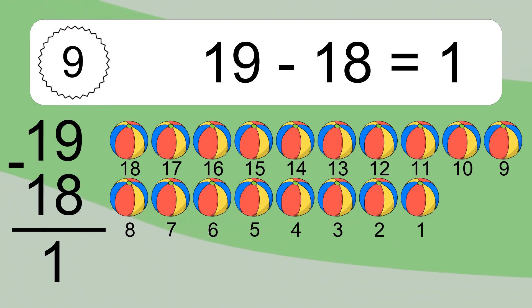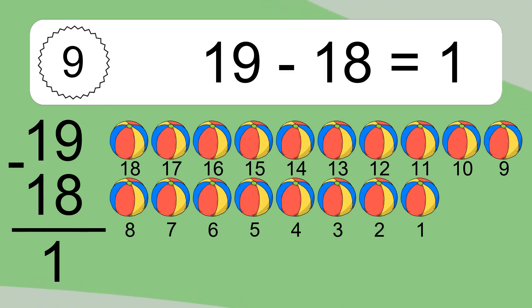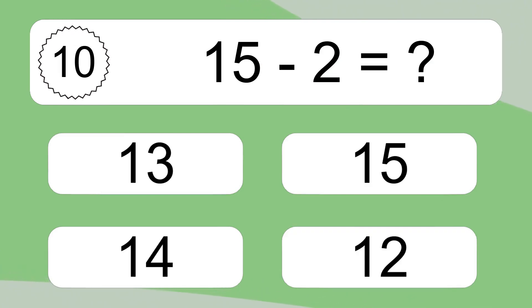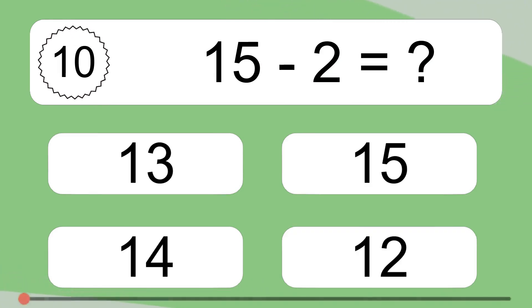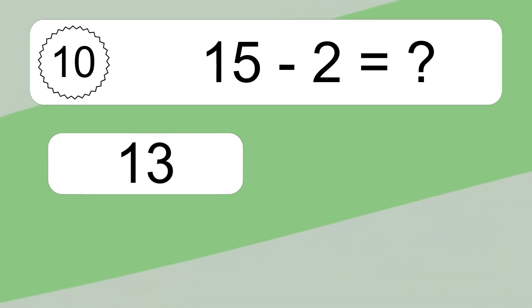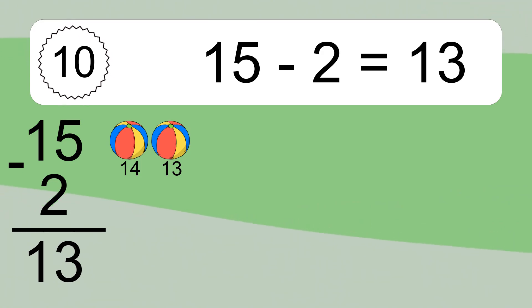16, 15, 14, 13, 12, 11, 10, 9, 8, 7, 6, 5, 4, 3, 2, 1. 15 minus 2 equals what? 15 minus 2 equals 13. Let's count it: 14, 13.